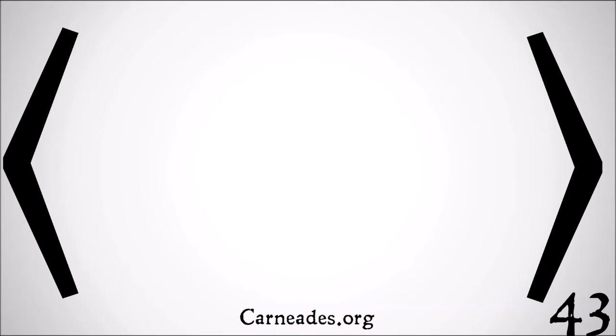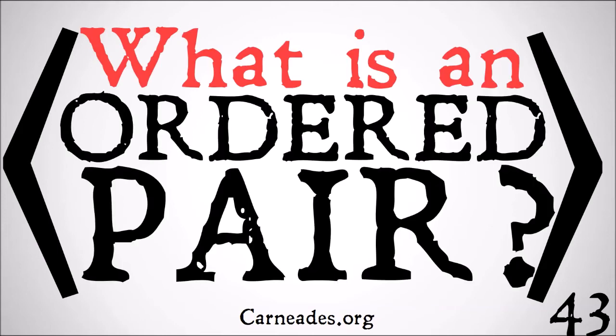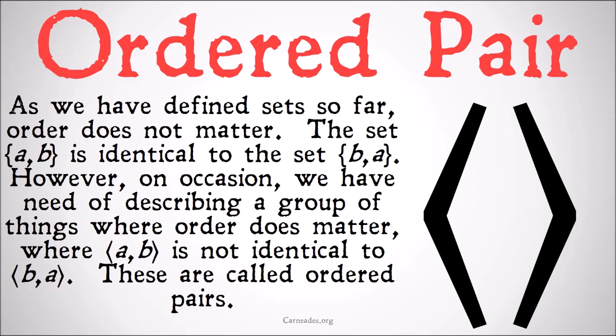In this video we're going to be answering the question: what is an ordered pair in set theory? As we've defined sets so far, order does not matter. The set AB is identical to the set BA. However, on occasion we have need of describing a group of things where order does matter, where AB is not identical to BA. These are called ordered pairs.